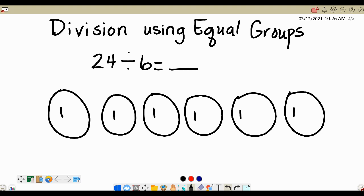So we have 6, 7, 8, 9, 10, 11, 12, 13, 14, 15, 16, 17, 18, 19, 20, 21, 22, 23, 24.